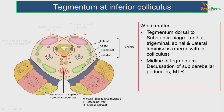In the white matter just dorsal to the substantia nigra, we can appreciate the fibers coming from the pons: the medial lemniscus, trigeminal lemniscus, spinal lemniscus, and lateral lemniscus. The medial lemniscus carries fibers from the nucleus gracilis and cuneatus; in the medulla it is oriented sagittally. The cuneatus fibers are medial and gracilis fibers are lateral. The trigeminal lemniscus comes from the trigeminal nerve. The spinal lemniscus is the continuation of the lateral spinothalamic tract, and the lateral lemniscus is the continuation of the auditory pathway, ending at the inferior colliculus.